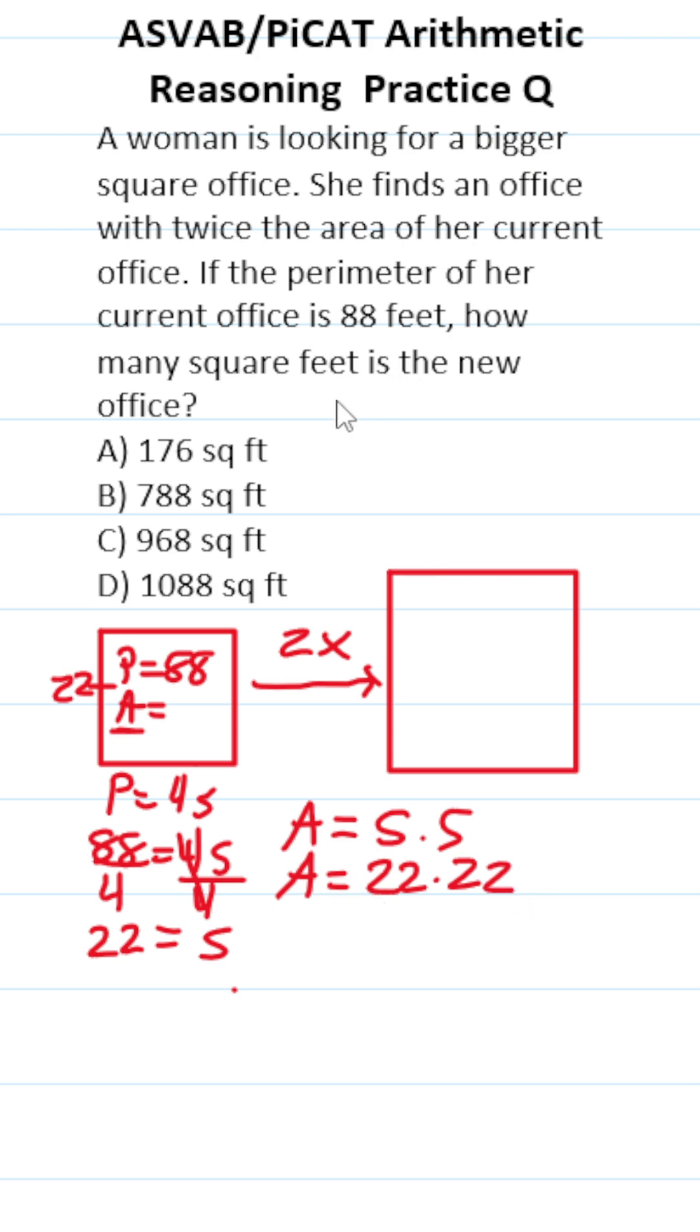And I'm going to work that out up here. We have 22 times 22. 2 times 2 is 4, 2 times 2 is 4. Before we do this, 2 times 2, we have to add a 0 placeholder. 2 times 2 is 4, 2 times 2 is 4. Let's add this up. This is 484.